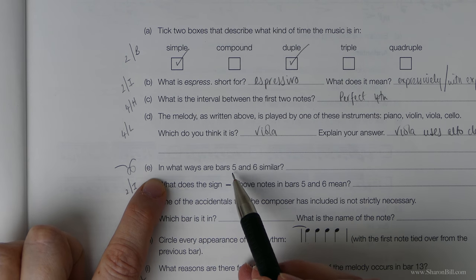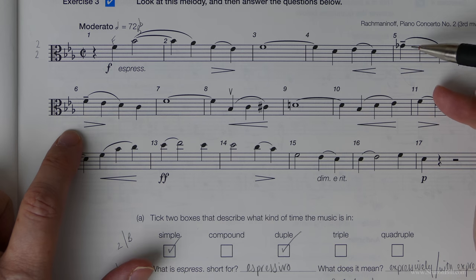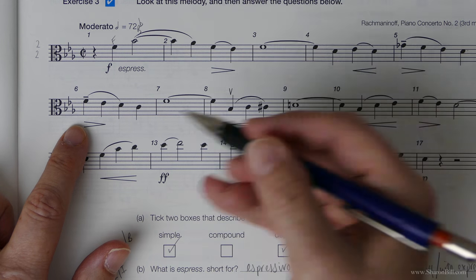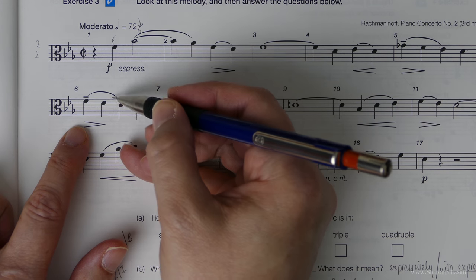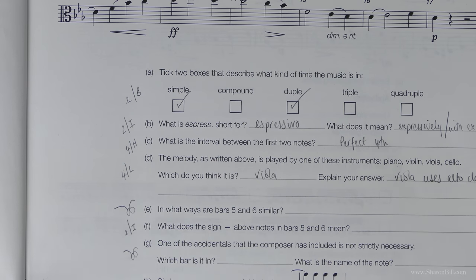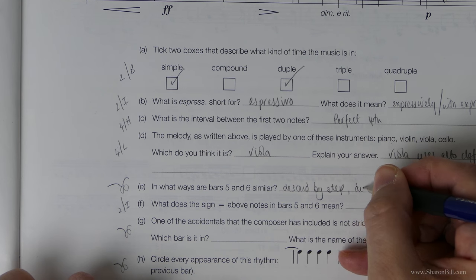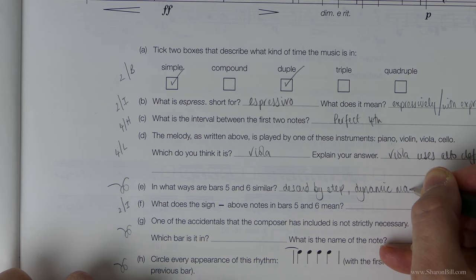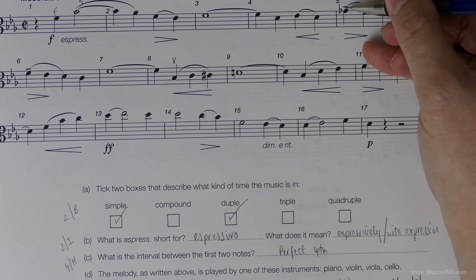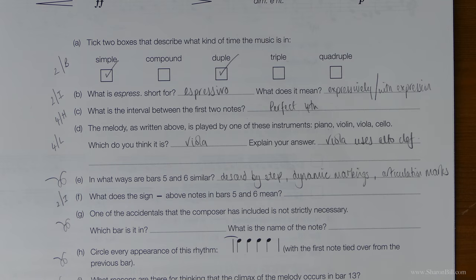In what ways are bars 5 and 6 similar? Let's have a look. We are descending by step. However, there's more similarity than that. The similarities are that they descend by step, we have the same dynamic markings, and we have the same articulation markings - the slur and the tenuto mark.